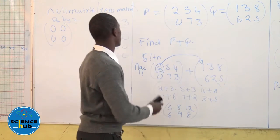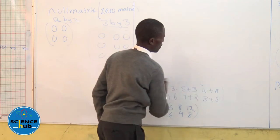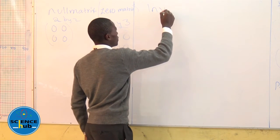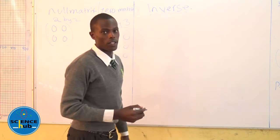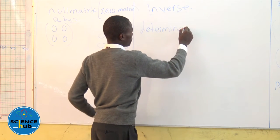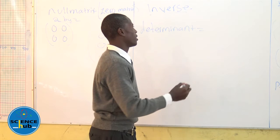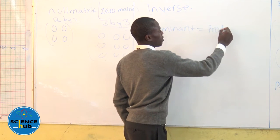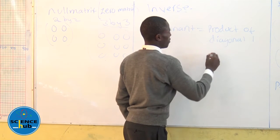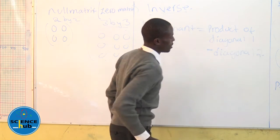Then we come to the inverse of matrices. In finding the inverse of matrices, you first find the determinant of the matrix. The determinant is found by taking the product of the principal diagonal elements minus the product of the other diagonal.